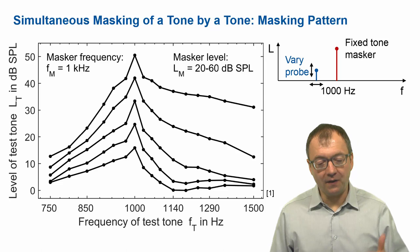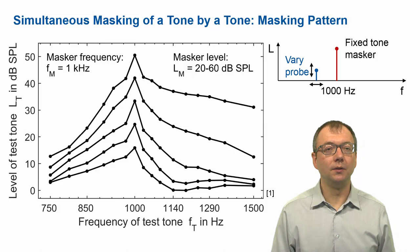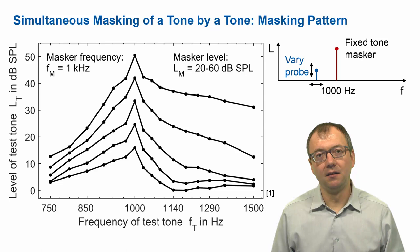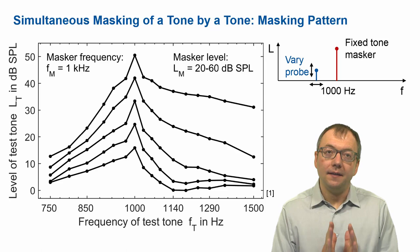So imagine there's a masker of one kilohertz — one thousand hertz — of various levels, all the way up to 60 decibels SPL. This masker is being played, it's masking another tone, and we vary the other tone's level so as to just hear the other tone — just be able to detect it in the presence of that masker. And this is what's being plotted in the masking pattern.